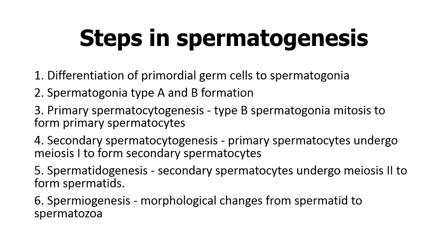The next step is spermatidogenesis, where meiosis 2 occurs, and so the secondary spermatocyte undergoes changes to give you a spermatid. The spermatid is the precursor to the spermatozoa; though it is oval or round shaped, it must undergo morphological changes to give you a spermatozoa, and those changes are known as spermiogenesis.